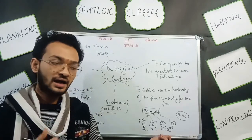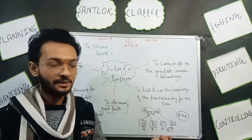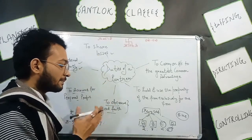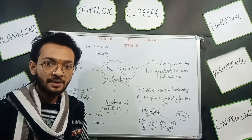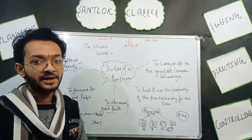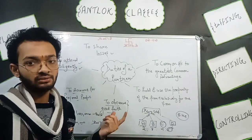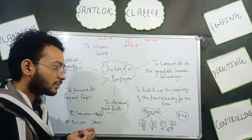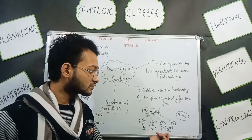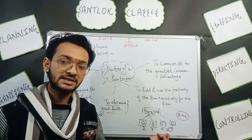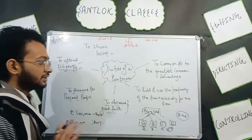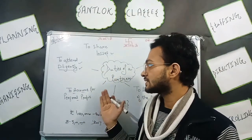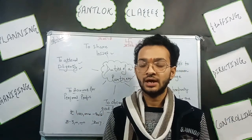Partner D cannot say that profits were shared in the ratio 2:3:4:5 but losses should be shared equally. If a partner was receiving a large share of the profit, they must also bear a proportionally large share of the loss. This is every partner's duty. I hope all the content was understood — it is very important in accounting. If you have any problem or query related to this material, you can post it in the comment section.